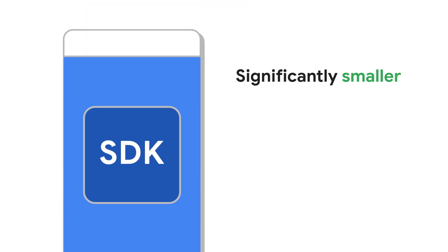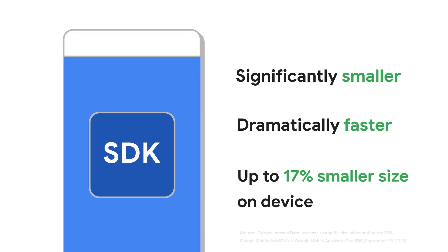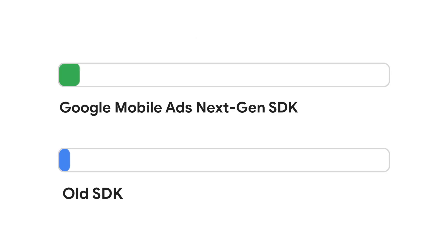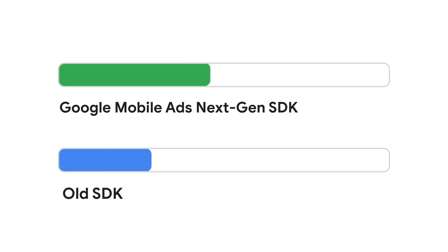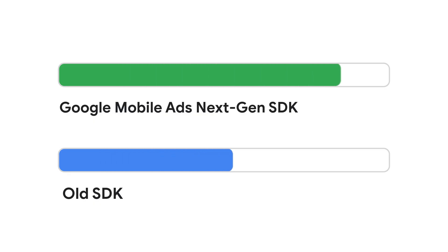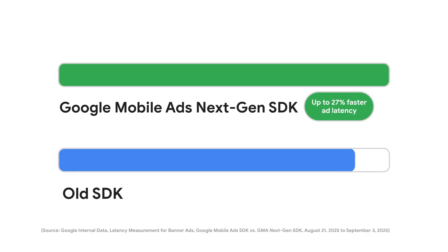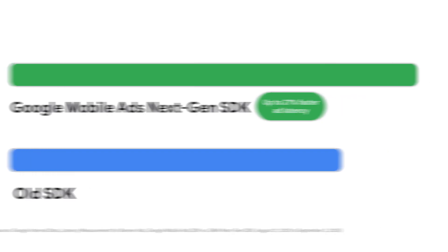First, let's talk about performance. The new SDK is significantly smaller on device and dramatically faster — 17% smaller in size compared to our previous version. When it comes to loading and rendering ads, you'll experience double-digit latency reductions, with banner ad requests being up to 27% faster than our previous version. We're anticipating even further improvements in 2026.